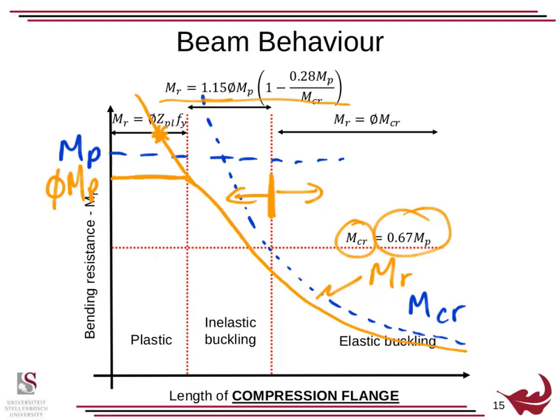This is a fitted curve. You look at that and think where on earth does that equation come from? It simply joins a point there to a point there and describes the transition—the inelastic buckling. The MCR and MP we can derive, but the middle bit is an equation joining those two values.